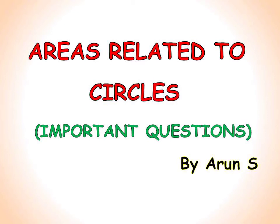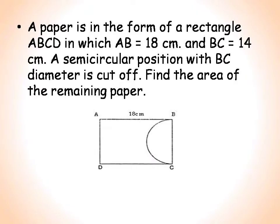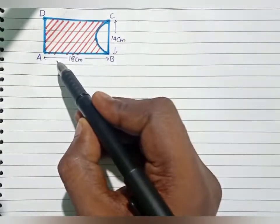Hello students, welcome to my online classes. Today we will solve a few questions from the chapter Areas Related to Circles. A paper is in the form of a rectangle ABCD in which AB equals 18 centimeter and BC equals 14 centimeter. A semicircular portion with BC as diameter is cut off. Find the area of the remaining paper.